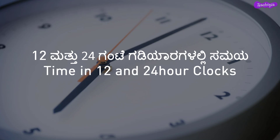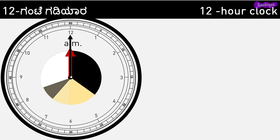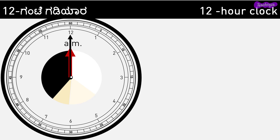Time in 12 and 24 hour clocks. A day has 24 hours, but the clock that we use has only 12 numbers. We say a.m. from midnight 12 till 12 noon, and p.m. from 12 noon up to 12 midnight.